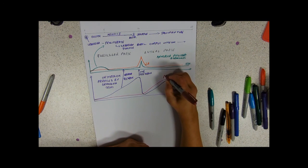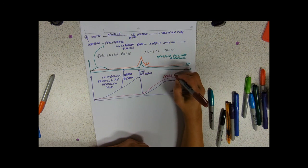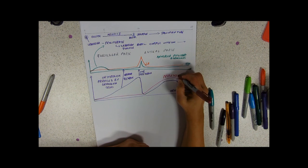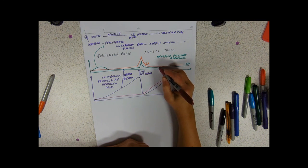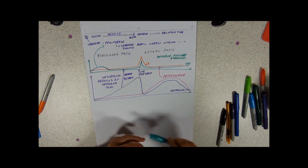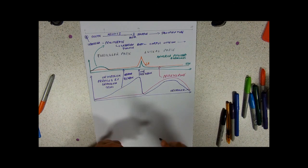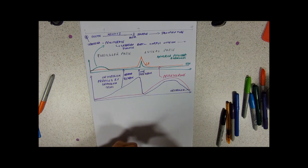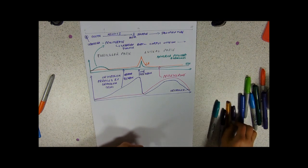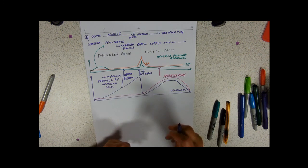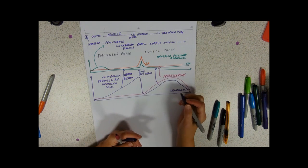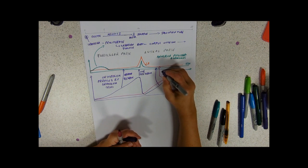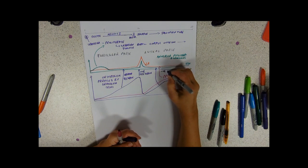So progesterone rises, once there's no hCG to keep it going it's going to dip. So that one's progesterone. Now in the luteal phase, both of these hormones - progesterone and estrogen - are both going to cause negative feedback and suppress the follicle stimulating hormone.